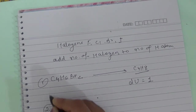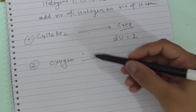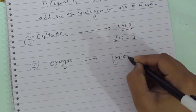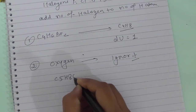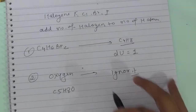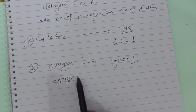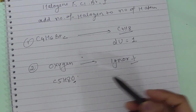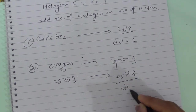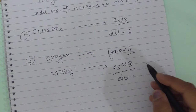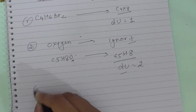If oxygen is given in your molecule, you can simply ignore it. For example, C5H8O — I can ignore the oxygen and work with C5H8. The degree of unsaturation here will be two, representing two double bonds or two rings or a combination.